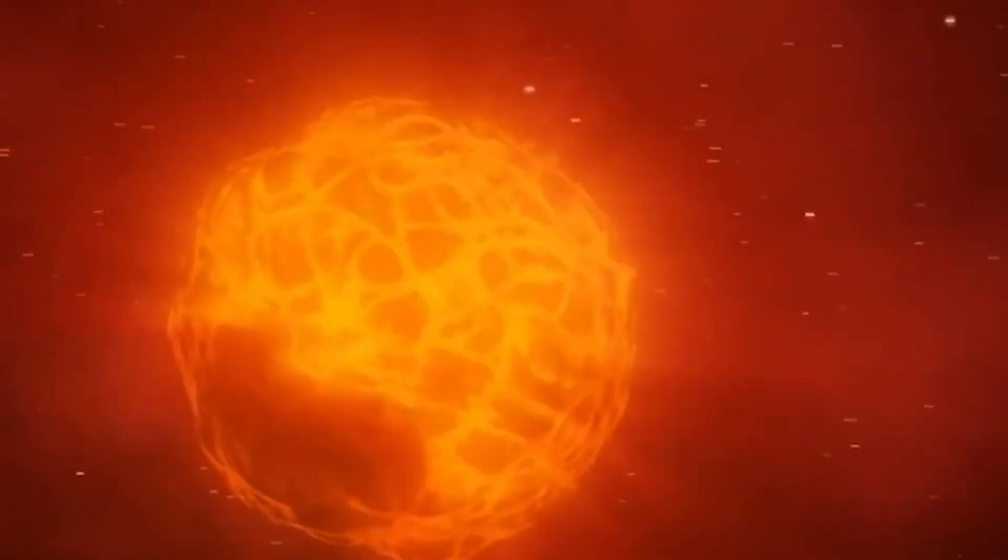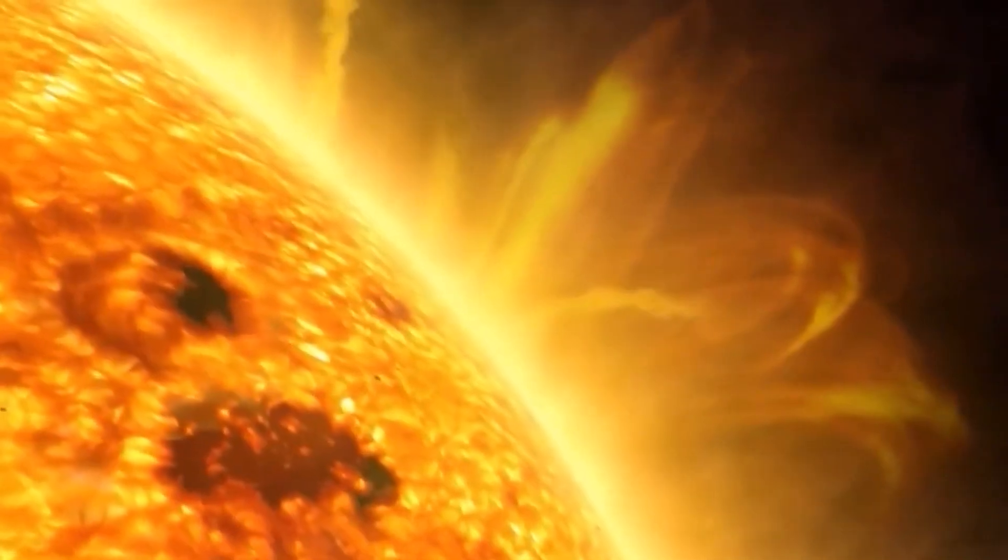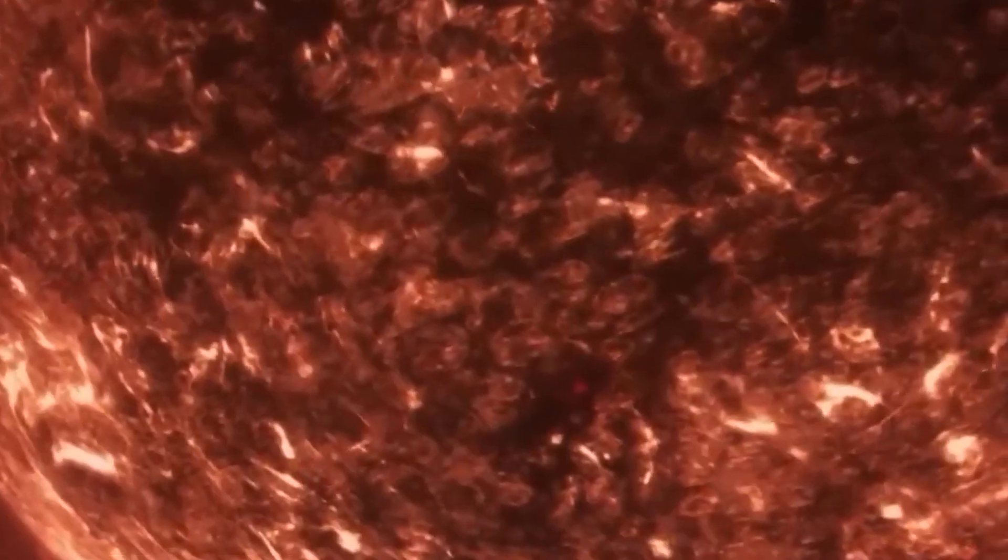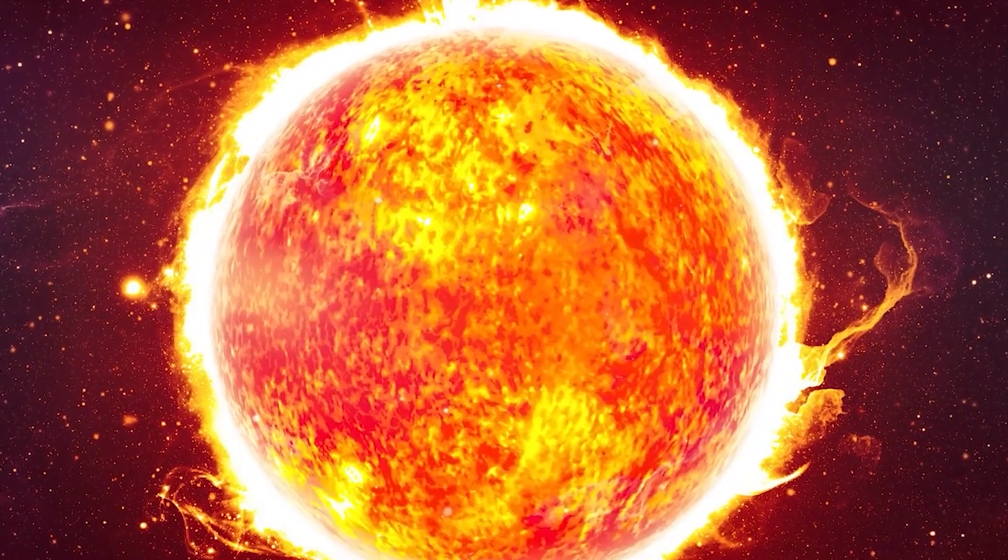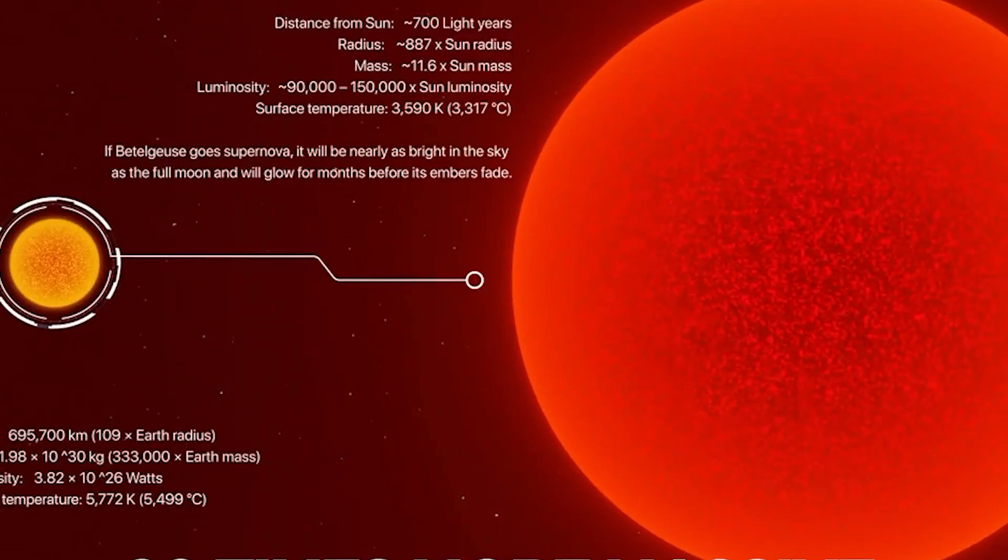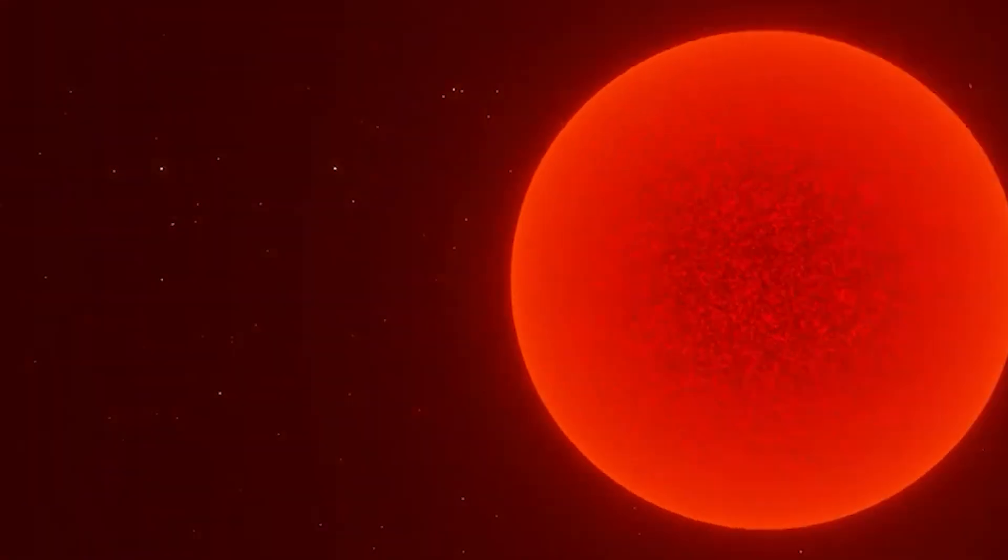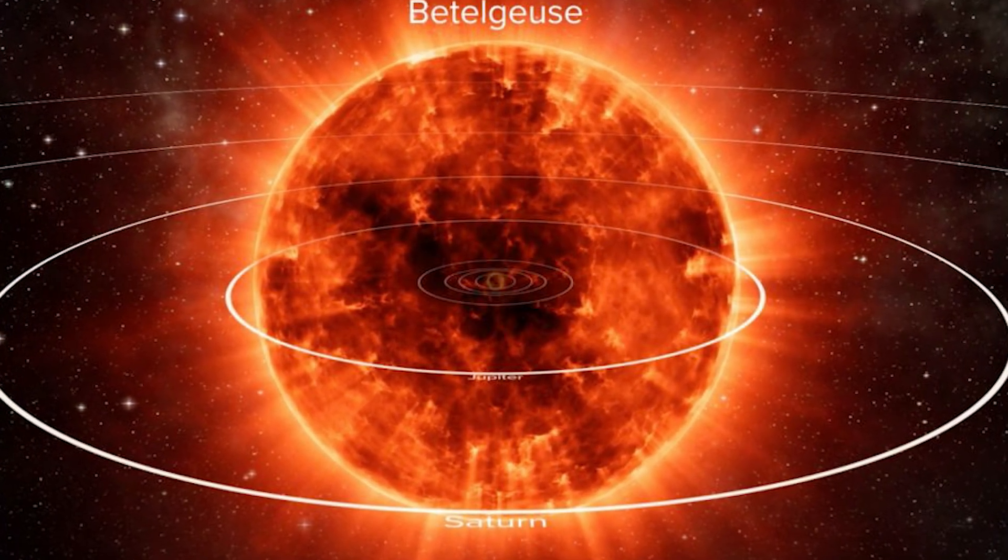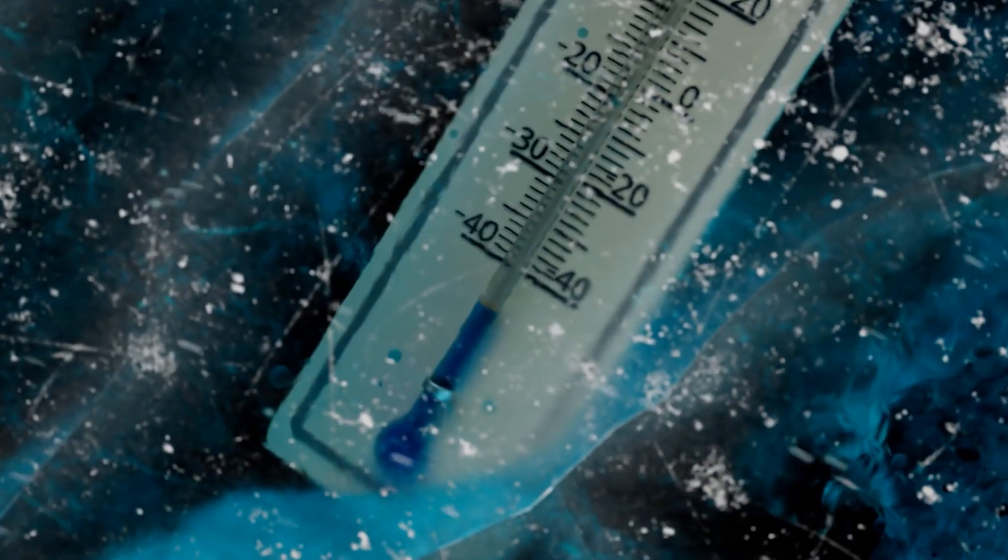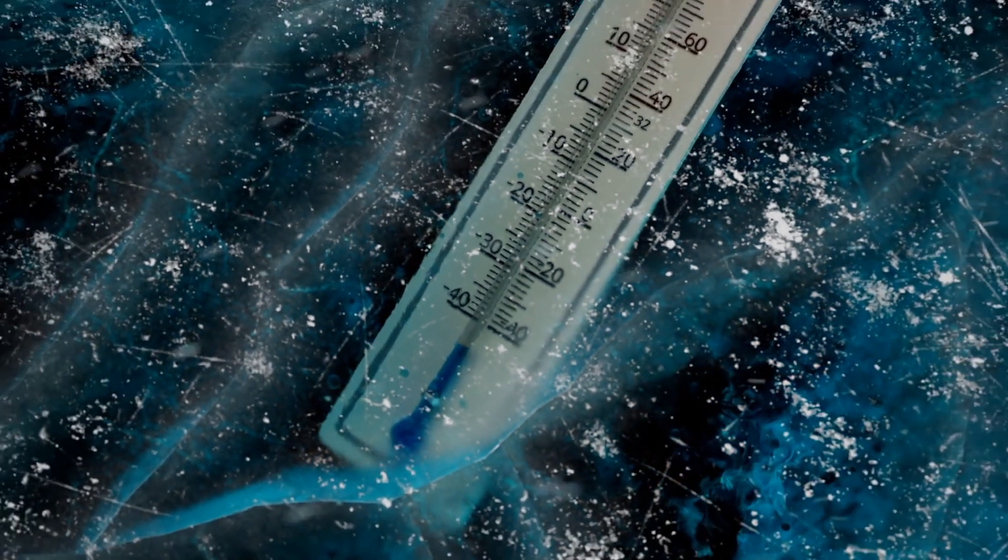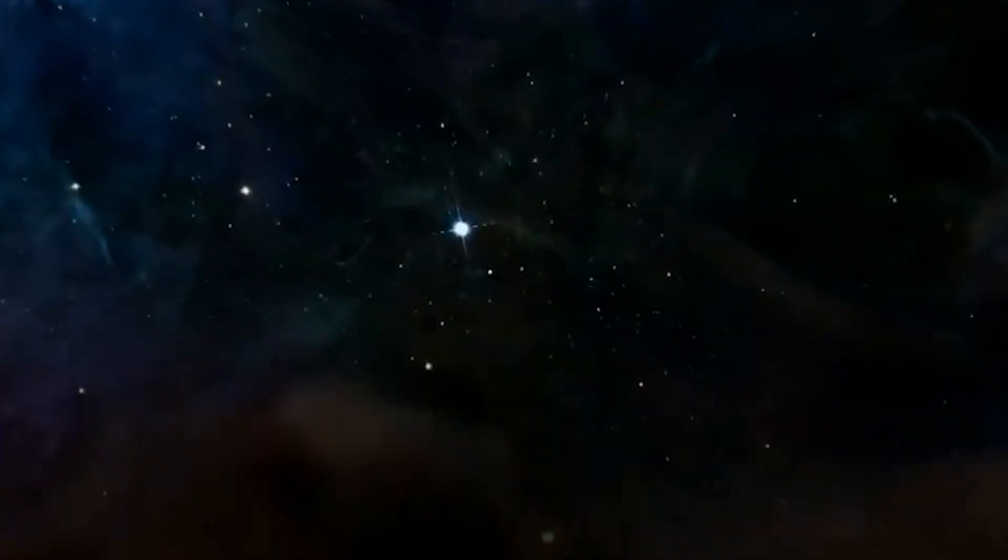One of the most interesting aspects of Betelgeuse is its distinct reddish appearance, stemming from its cooler surface temperature, approximately 3500 Kelvin. This temperature stands in contrast to our sun, which operates at a warmer 5500 Kelvin. Despite Betelgeuse's larger size compared to the sun, its cooler temperature results in it being dimmer in apparent brightness. This lower surface temperature affects the energy emitted per unit of surface area, contributing to Betelgeuse's perceived dimness, despite its immense size.